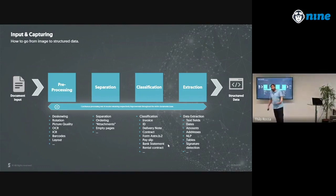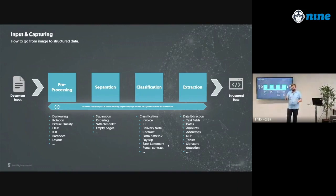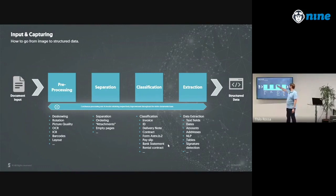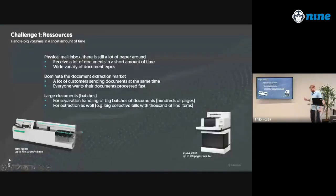Customers sometimes have scanners and want to take a whole batch, put it on the scanner, and scan everything at once. Third is classification — what kind of document is it? And fourth is extraction of text fields, dates, amounts, addresses, sentences, tables, signatures, and so on. This is the hardest part of everything. This is where we put in all the brain, and I'll show you how we automatically train on this and how the architecture is built.